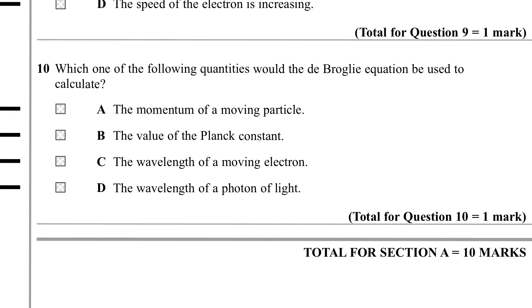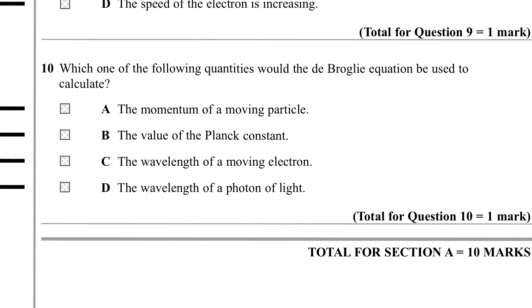Question 10. Which of the following quantities would the de Broglie equation be used to calculate? So this is straight book work. De Broglie said that a particle would have an associated wavelength which was related to Planck's constant over its momentum. So this is all about calculating the wavelength belonging to a moving particle, so it's C.